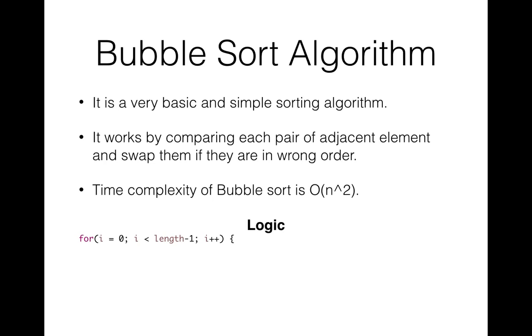In bubble sort we use two for loops. The first loop will run from 0 to n minus 1, where n is the length of the array. The second loop will start from 0 to length minus 1 minus i. Why minus i? Because after every iteration the highest element reaches the end of the array, so we don't need to pick them and sort them as they're already sorted.